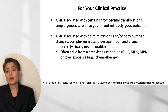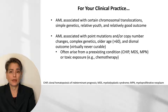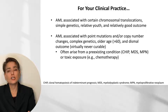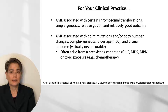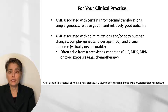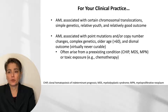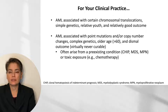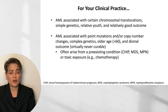In clinical practice, it is useful to think of AML as two broad categories. First, AML associated with particular chromosomal translocations — simpler genetics, relatively young patients, and relatively good prognosis. Second, AML associated with point mutations and/or copy number changes — complex genetics, older patients, virtually never curable and often arising from pre-existing conditions such as MDS, MPN, CHIP (clonal hematopoiesis of indeterminate prognosis), or toxin/chemotherapy exposure. Patients treated for Hodgkin lymphoma, for example, can develop secondary AML.